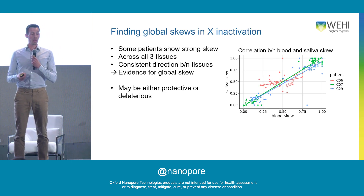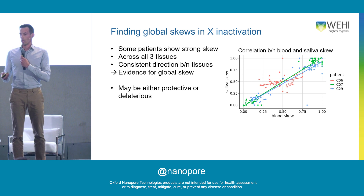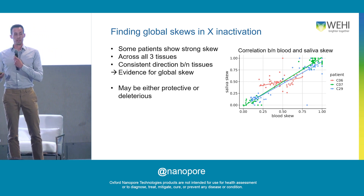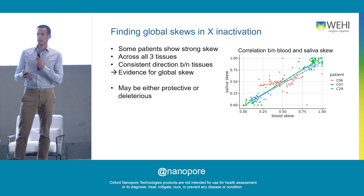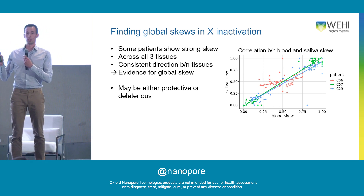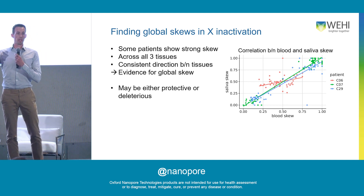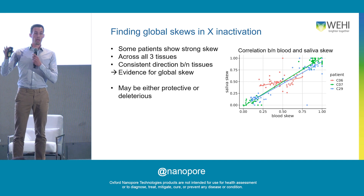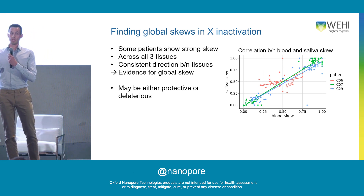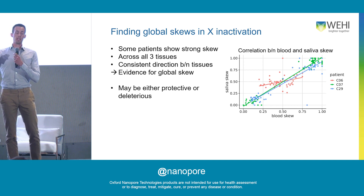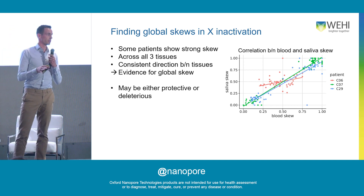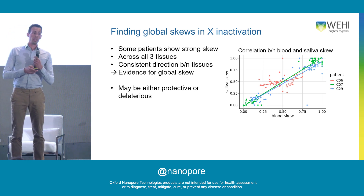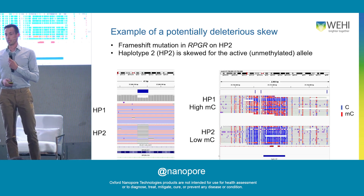We find some patients with quite strong skews. The red patient here is not particularly skewed, but the green and blue ones are. There's really good concordance between tissues — each dot is a haplotype. In one example, haplotype 1 was always the inactive one, and if it was inactive in blood it was also inactive in saliva. That tells you it's not a tissue-specific skew — it's the whole organism that's skewed, and that skew may be either beneficial or deleterious depending on which allele is affected.